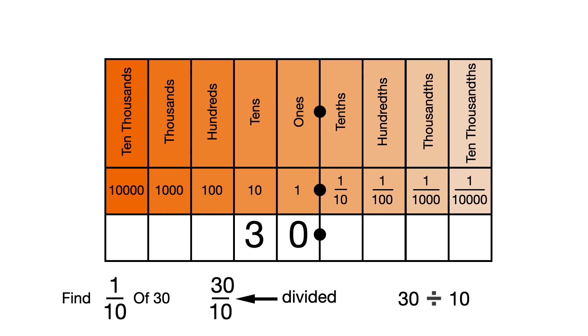Now we can divide by 10 using a place value grid. Every time we move a digit one place to the right, we're dividing by 10. We're making it 10 times smaller.